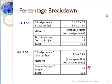For grading, as usual, we will use 90 to 100 for A, 80 to 89 for B, 70 to 79 for C, and 60 to 69 for D, and the rest are not credited.